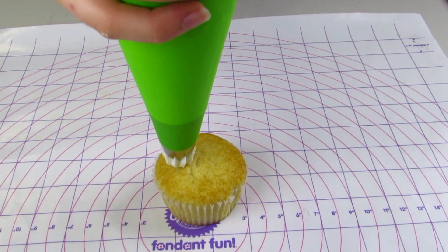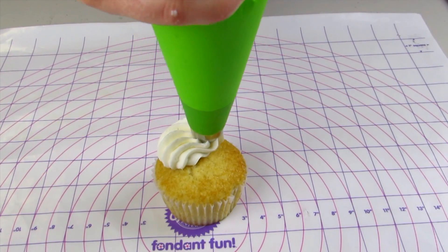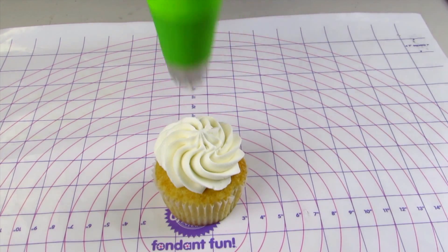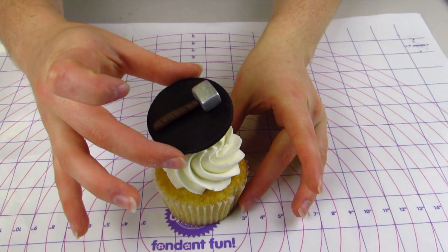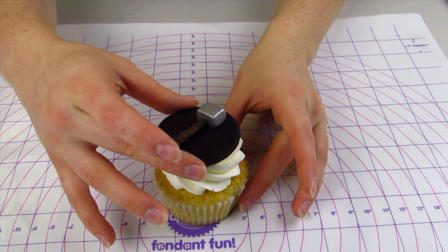Once it's dry you're ready to put it on top of your cupcake. So I've already baked a vanilla cupcake, I'm just using some vanilla buttercream icing and I'll stick my Thor hammer right on top.